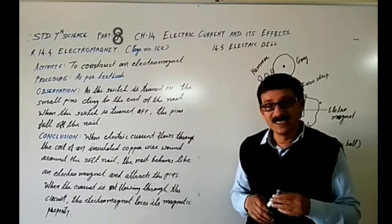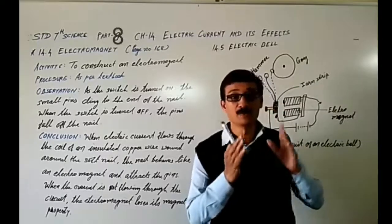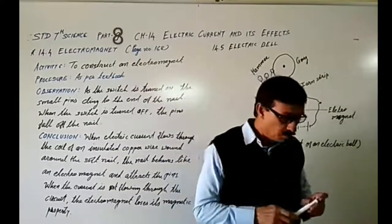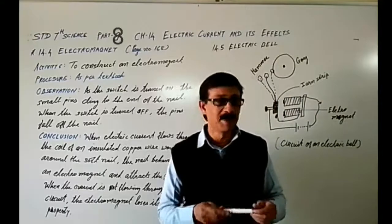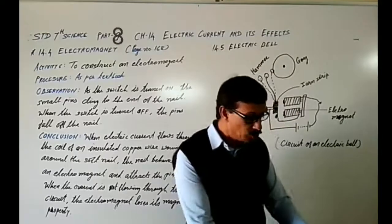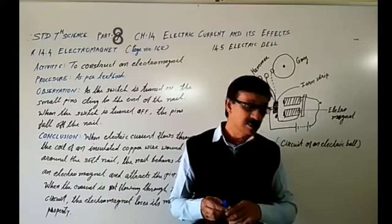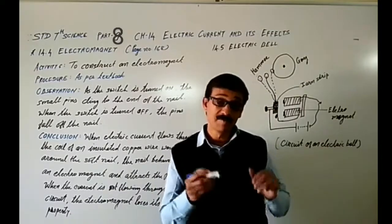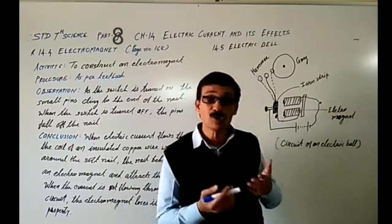That is what we discussed in the last part. Now in this part we will discuss the same, and we will call that wire — when the wire behaves like a magnet — we will call it an electromagnet. So first of all, let's go to page number 168. The scientist called Hans Christian Ørsted also wondered about this.